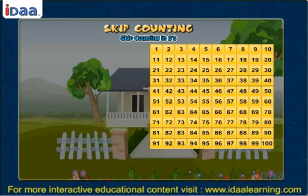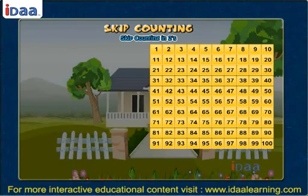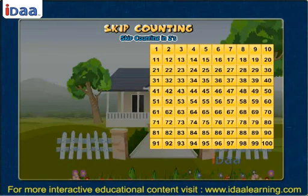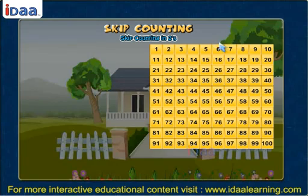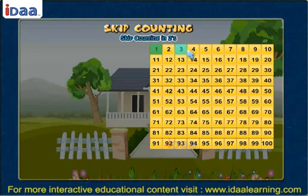Here is a number chart from 1 to 100. Skip counting in twos means selecting numbers leaving 1 every time. See on the screen how skip counting in twos is done.